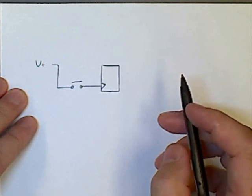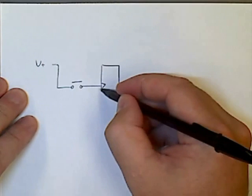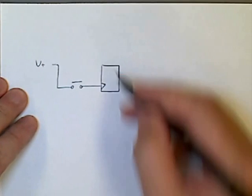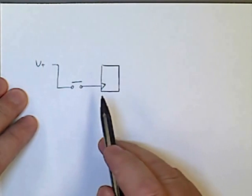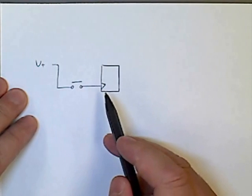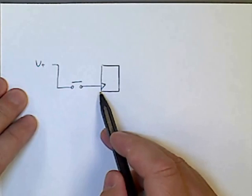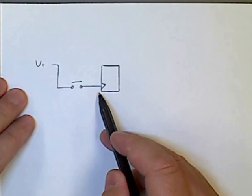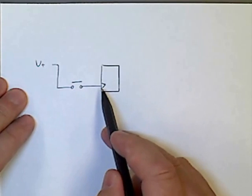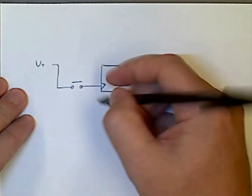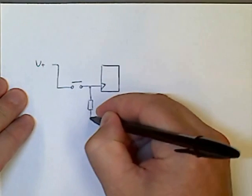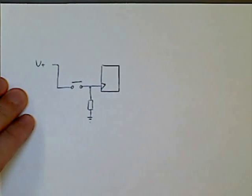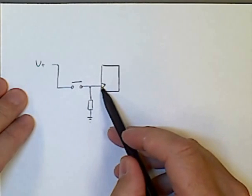In order to make this actually work properly, we need to have it so that when the button switch is open, this isn't just floating. A floating input is susceptible to pick up noise from the environment, so electromagnetic interference, and that could be enough to trigger this. So we need to have a pull-down resistor to ground in order to make sure that this voltage is zero.